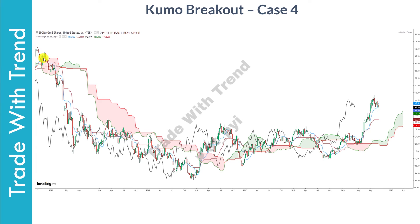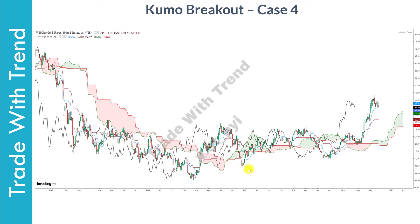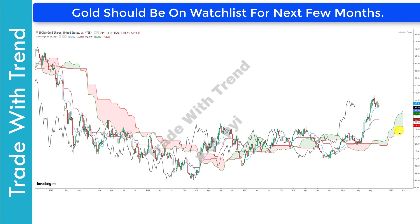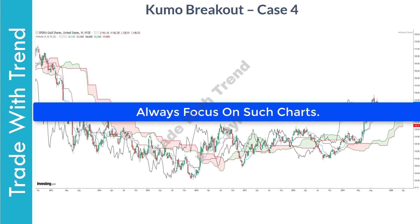Let us now look at gold as a case study on a weekly timeframe chart. Gold was clearly consolidating in one region — Tenkan and Kijun were flat, and Senku A and Senku B lacked trend. Kumo Twist was happening multiple times with price moving above and below the cloud, so there was no trade to be taken. In the current context, price is clearly trending higher, Senku A and Senku B are trending on the upside, Chikko is clearly above price, and Tenkan and Kijun are both clearly trending higher. Heading forward, one should only look to take long trades in gold as the trend is clearly up.